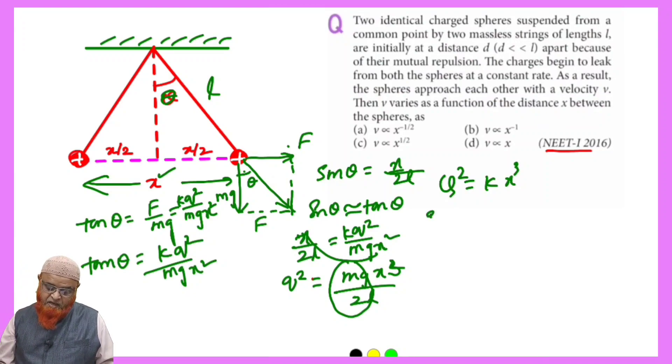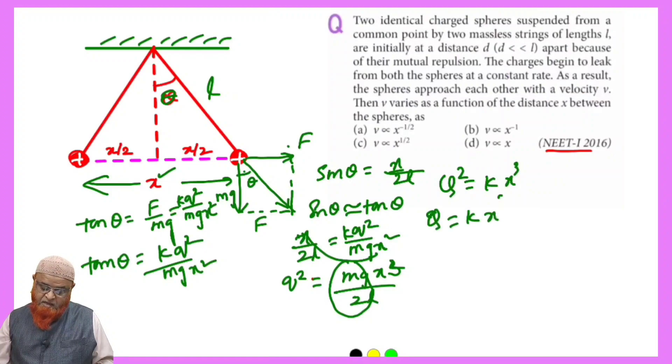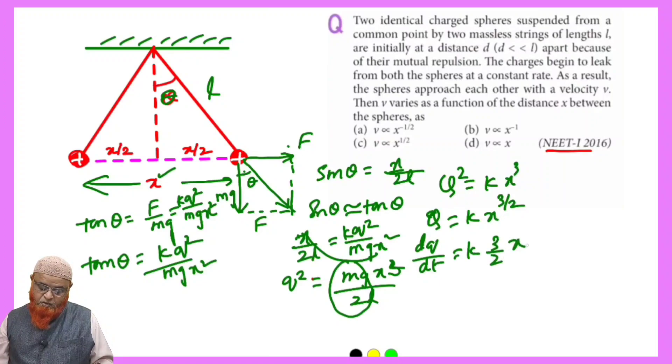Then after differentiating, q if you take here, this is x^(3/2), so the square goes to that side and becomes 3/2. So differentiating dq/dt with respect to time, k, this is 3/2 into x^(3/2 - 1) because d/dx of x^n is nx^(n-1).